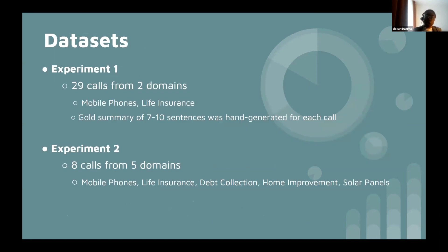We conducted two experiments: objective evaluation and subjective evaluation. For the objective evaluation, we took 29 calls from two domains. The number of calls was limited by how many gold summaries we could create quickly — speed was of the essence for the industry work. For the subjective experiment, we used eight calls from five different domains, limited by wanting participants to spend only two hours on the task.